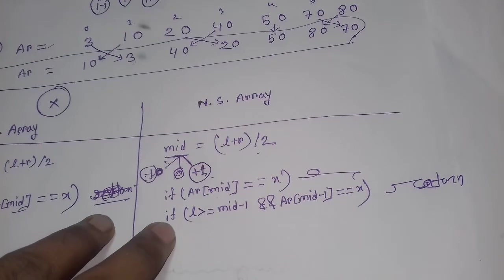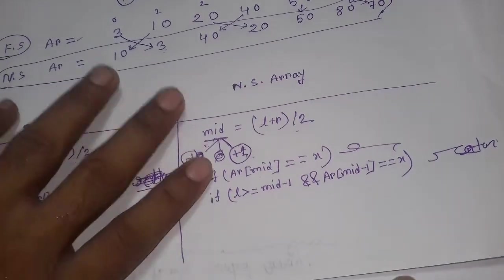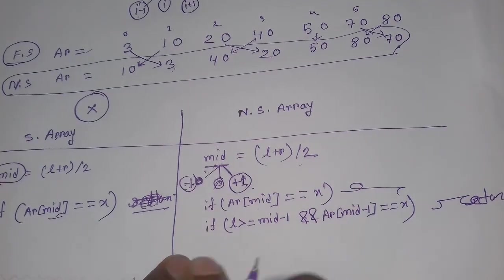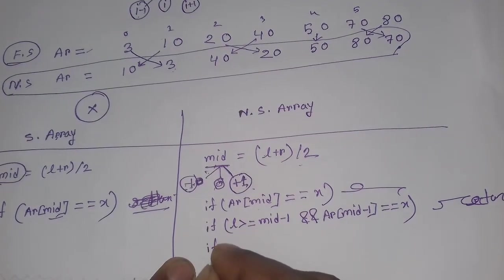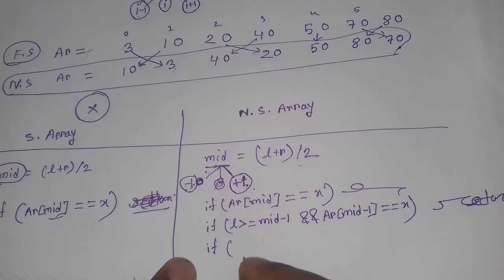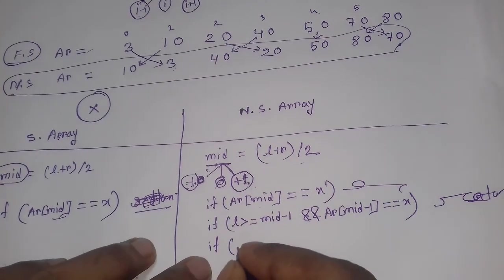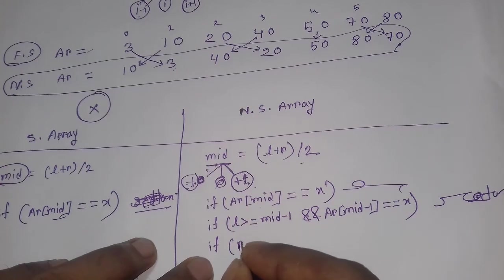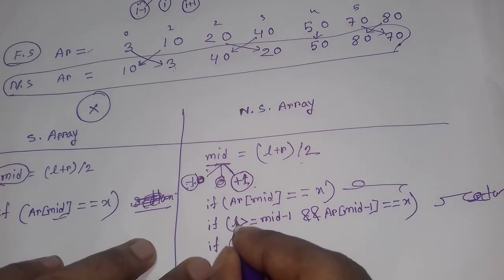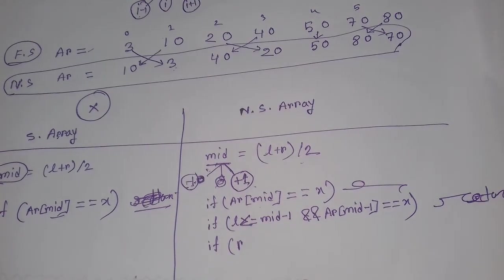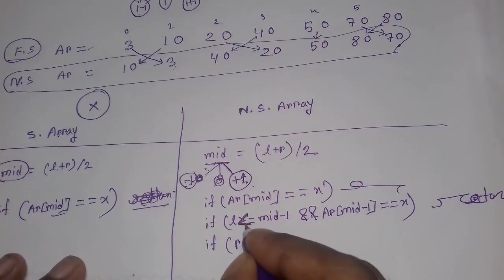If we find the element, we return the corresponding index. We check mid-1 and mid+1. If the element is found at mid+1, we confirm that index is within bounds — specifically that r is greater than or equal to mid plus 1.